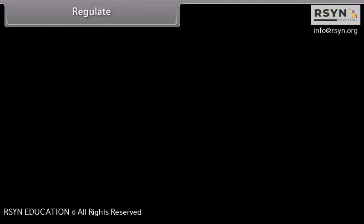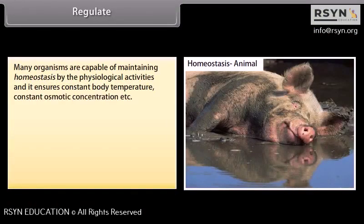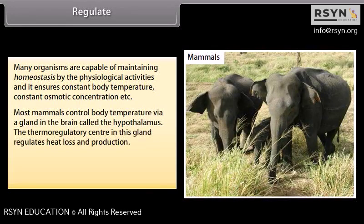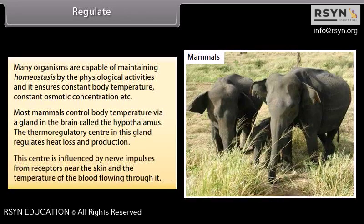Many organisms are capable of maintaining homeostasis through physiological activities, ensuring constant body temperature and constant osmotic concentration. Most mammals control body temperature via a gland in the brain called the hypothalamus. The thermoregulatory center in this gland regulates heat loss and production, and is influenced by nerve impulses from receptors near the skin and the temperature of blood flowing through it.